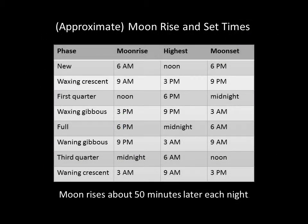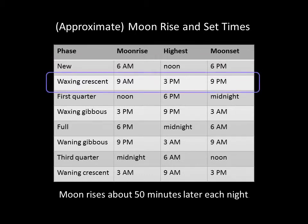The way my brain works, I find it useful to put all of the information in a table. I can then work out the rise and set times for each lunar phase by starting with the new Moon. I know the new Moon rises and sets with the Sun, and as the Moon waxes, it will rise a little later each day. I can therefore figure out that the next phase, the waxing crescent, will rise around 9 a.m. and will set about 12 hours later at 9 p.m. The whole table can easily follow from that.